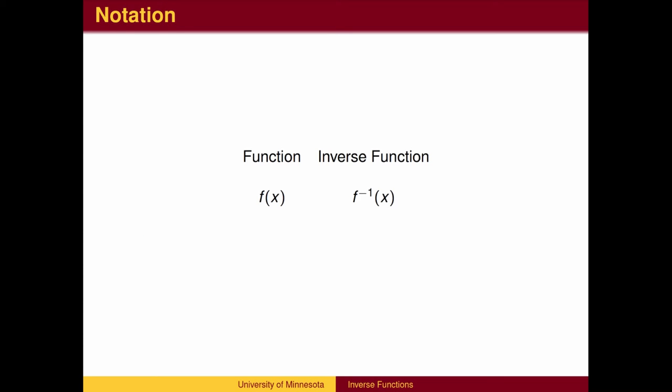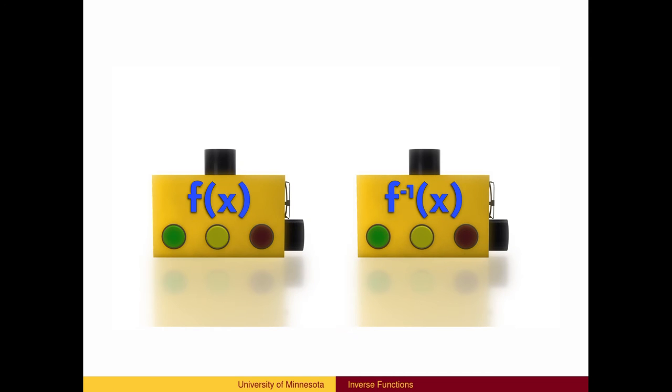Symbolically, given a function f of X, we denote the inverse using a superscript negative 1. The symbol is read f inverse. If a certain function takes X as its input and produces Y as its output, the inverse of that function will convert the input Y back to the output X.